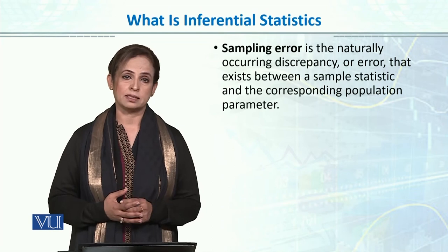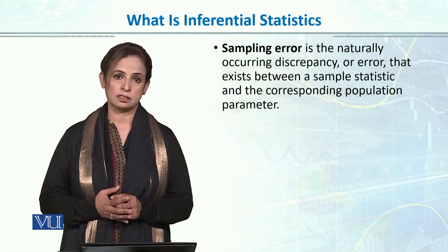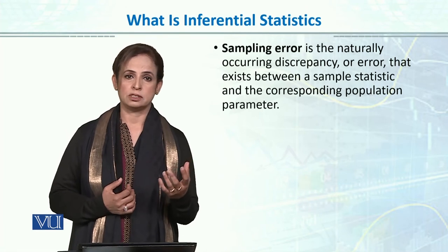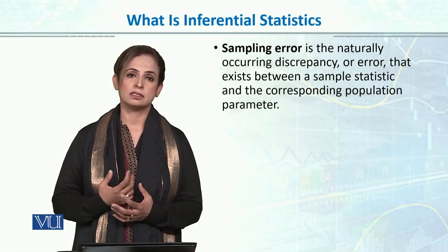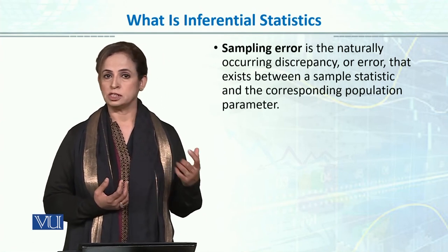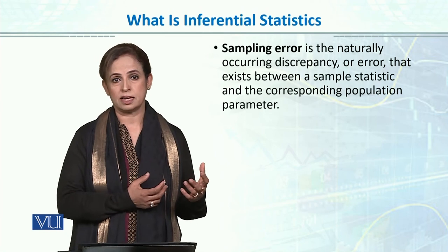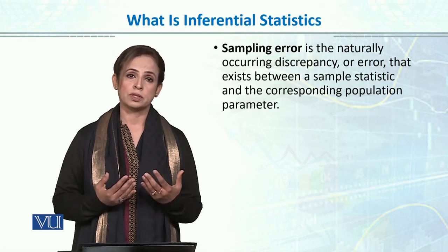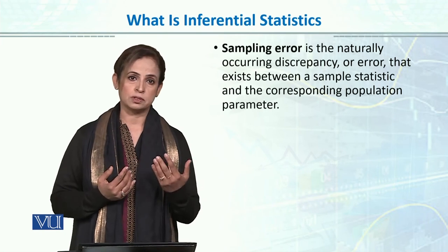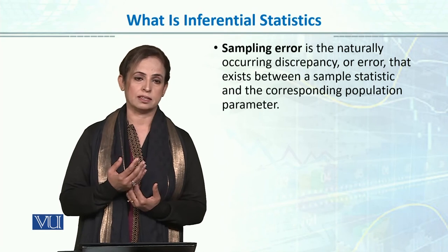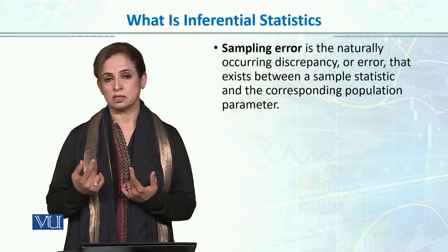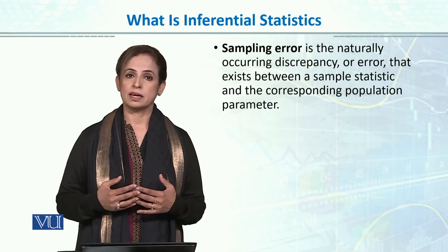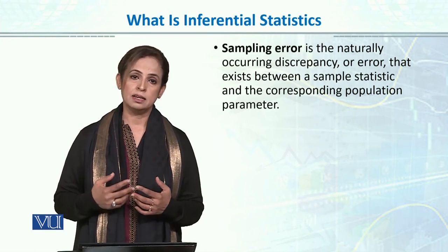Ek aur baat jo inferential statistics mein hum karenge, jo ek researcher, statistician, or scientist ko consider karna hota hai, woh hai sampling error. Sampling error ka matlab hai ki aap ne badi population se ek sample draw kiya aur uske oopar saare statistics calculate kiye. Phir actually woh population ke jo parameters hain — jo population ke characteristics hain — we are estimating those with the sample statistics, which mostly are not equivalent. Woh close hote hain, thoda distant bhi ho sakte hain, lekin exactly wohi values nahin aati jo humari population ki hoti hai jo ke truly exist karti hai. So jo difference hai between sample statistic and population parameter, that difference is known as sampling error. Aur jitni sampling error kam hogi, humare inference, humare conclusions utne hi zyada reliable honge.